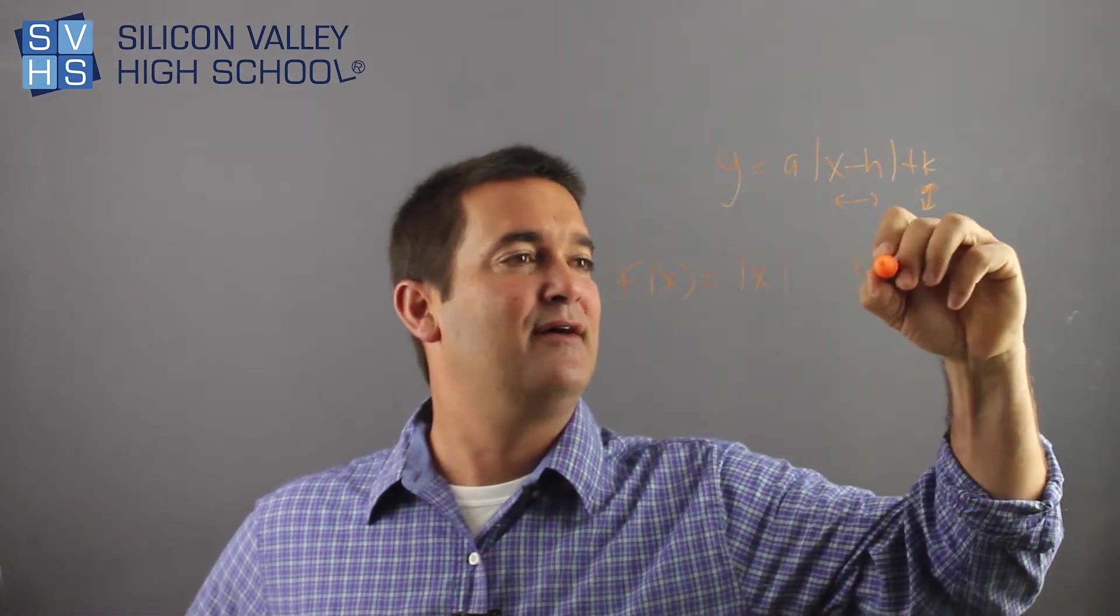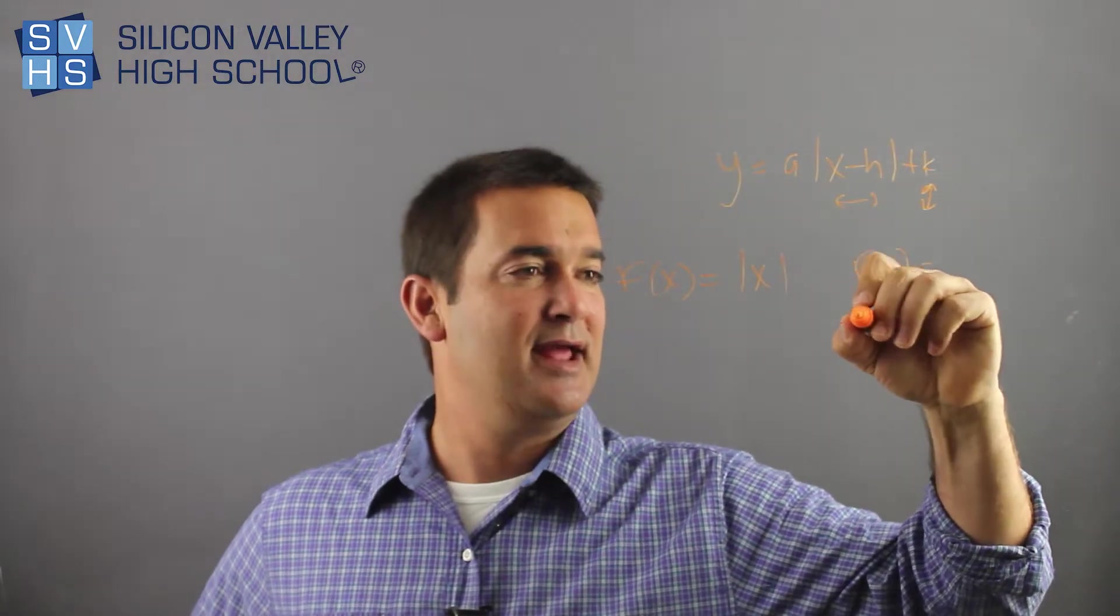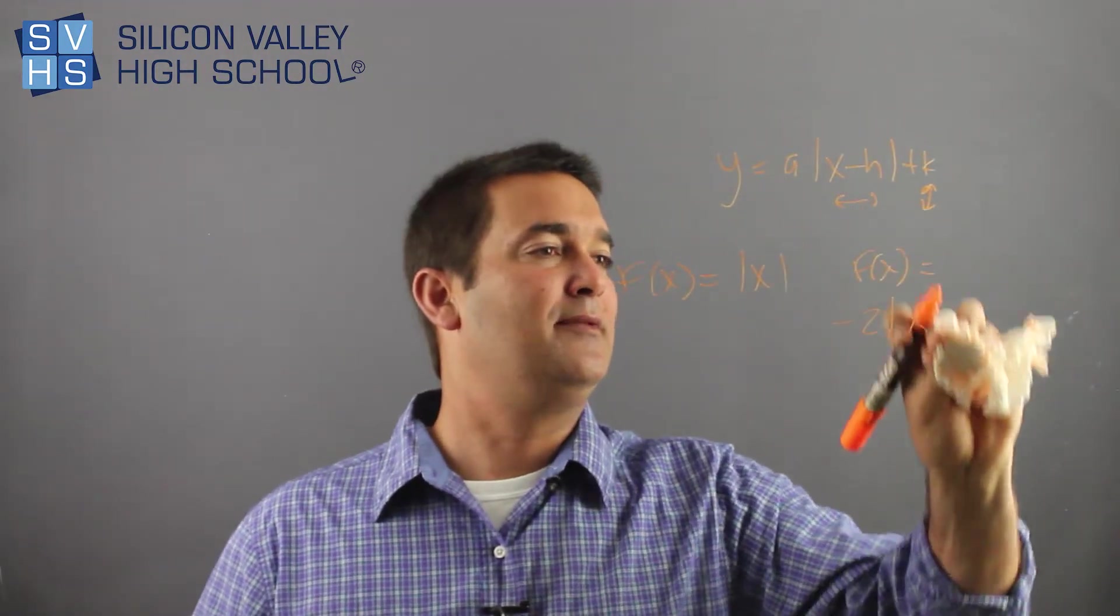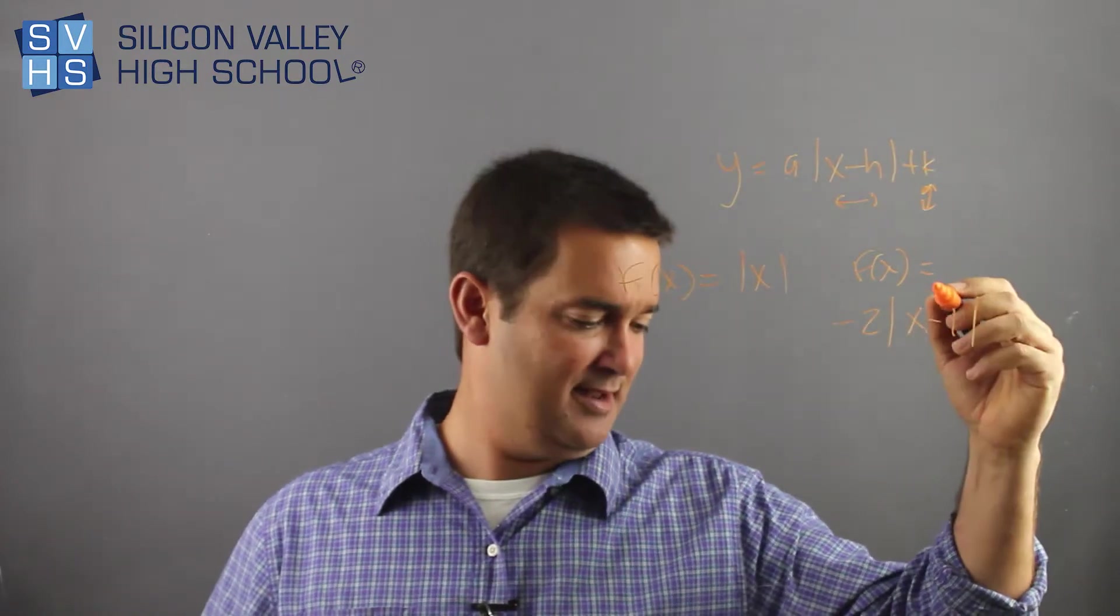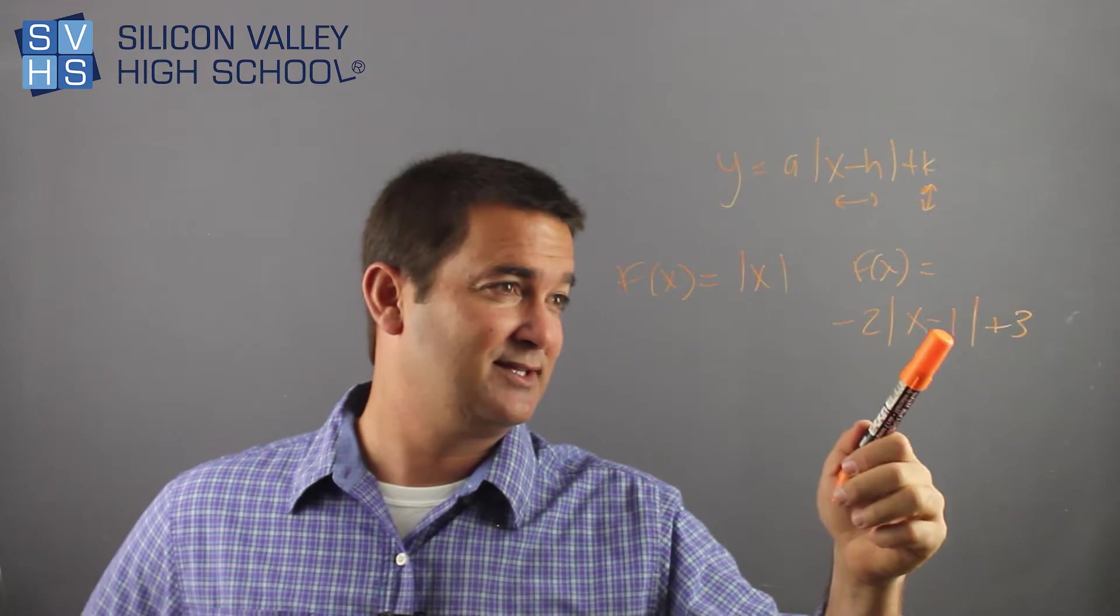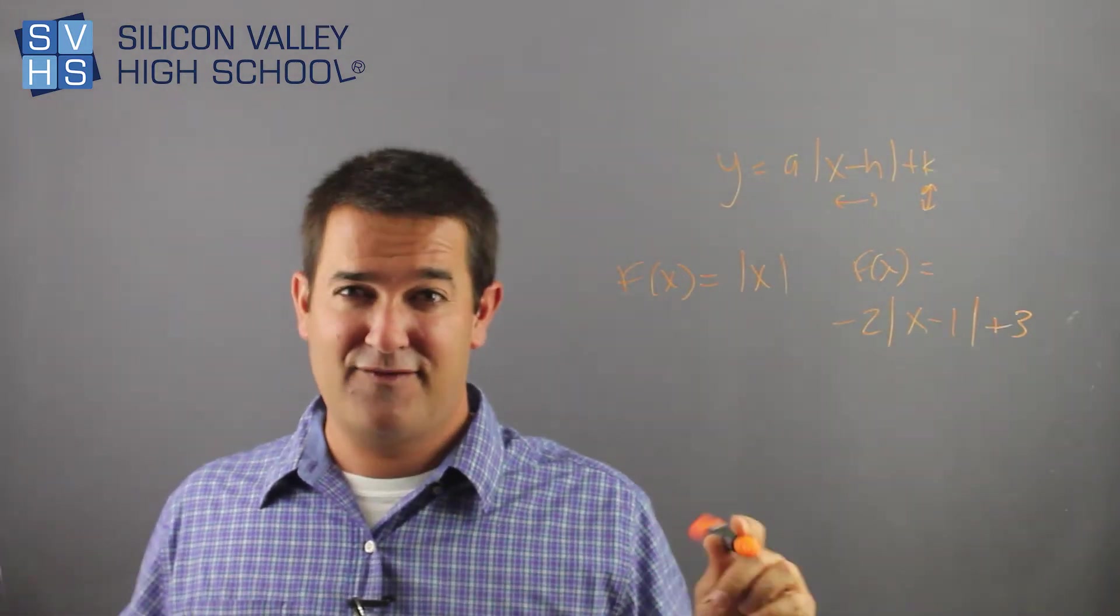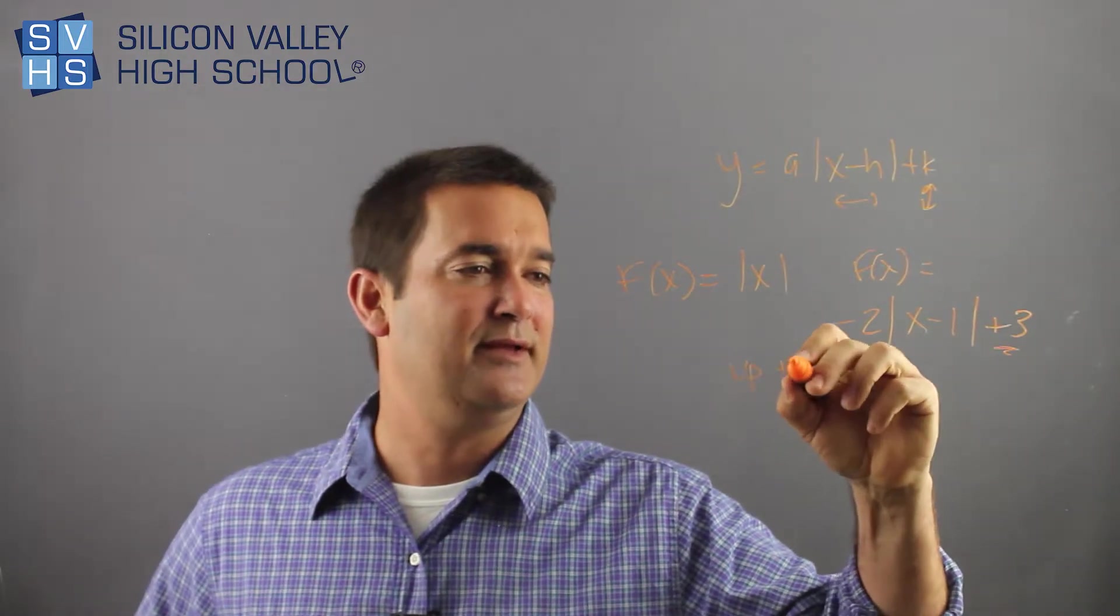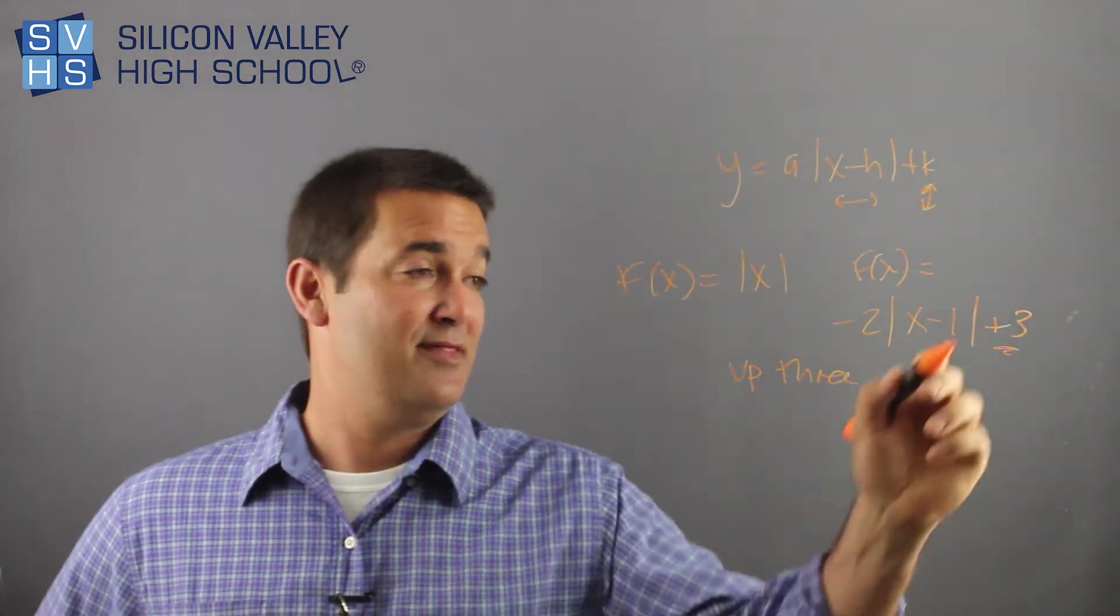And then they said, now you have f of x equals negative 2x, let me just change that, minus 1 and then plus 3. Three things are going on. You have this little sucker, this little sucker, and this little sucker. The easiest one by far is the vertical. Okay, I know it went up 3. That's a no-brainer, okay. That's up 3.